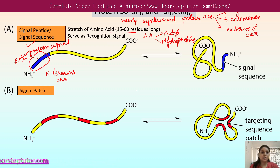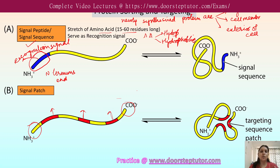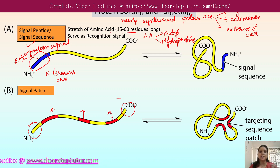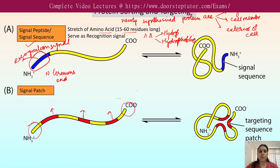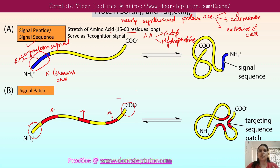There are also signal patches, which are not present at the end of the growing polypeptide chain. Instead, they are present in the interior of the polypeptide chain, made possible by the juxtaposition of amino acids before folding — when they are separated from one another. These are the two ways by which proteins are able to sort and target themselves to a desired location or organelle.